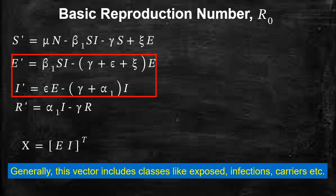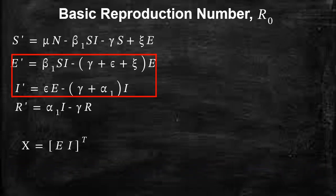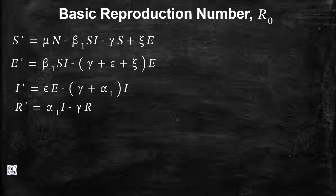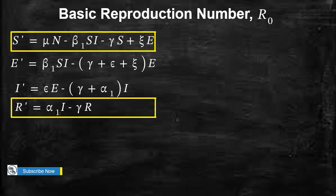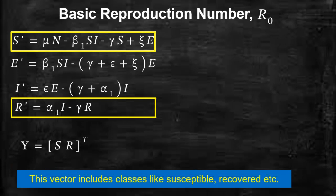These two compartments represent the infected classes. The uninfected class is represented by vector Y, and this comprises the S and R compartments. After identifying the infected and uninfected classes,